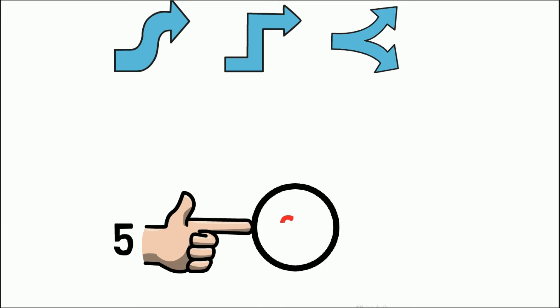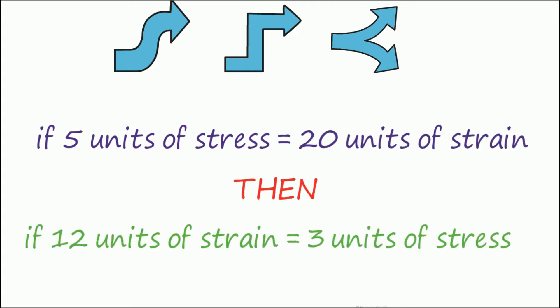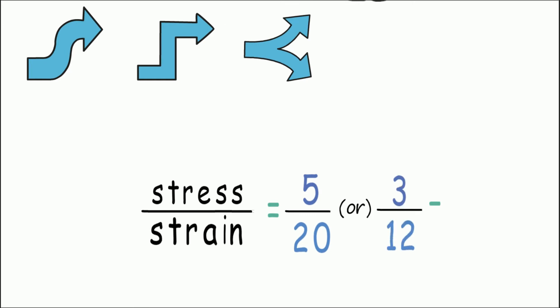That is, a stress of 5 units on an object could result in a strain of 20 units. And if the same object experiences 12 units of strain, then the stress will be of 3 units, because stress is proportional to strain. And the constant that determines this proportionality in this example is 4, and this is what a coefficient means: the ratio with which something increases or decreases.